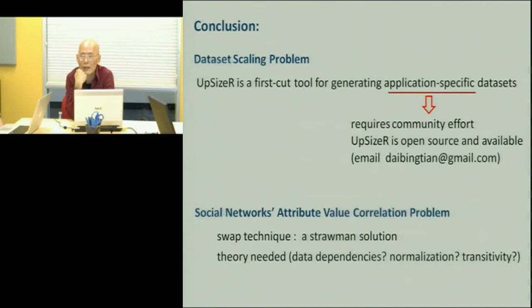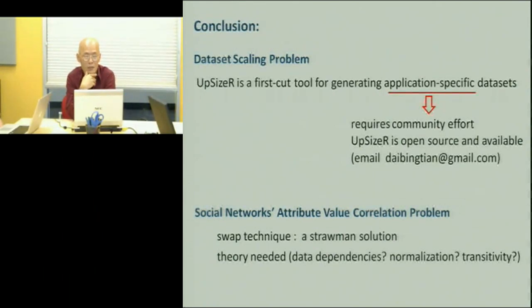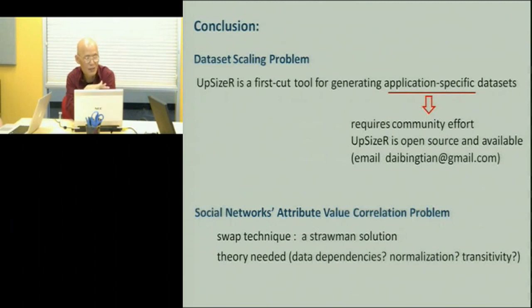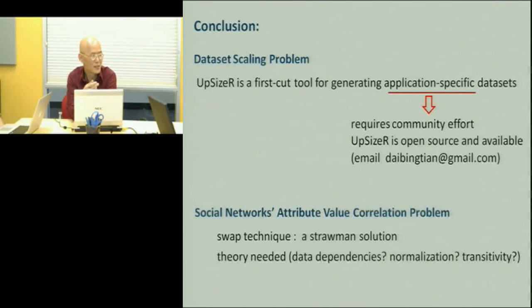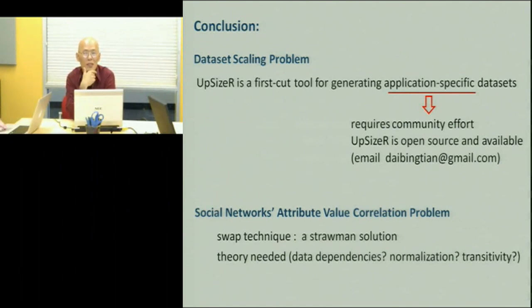Classical database theory is good at things like 'a friend of a friend must be a friend,' but not so good at 'a friend of a friend is likely to be a friend,' because that involves uncertainty and probability. There are probabilistic databases, but they don't look at this kind of relationship. So I go around talking about Upsizer, hoping to stimulate some work on this.